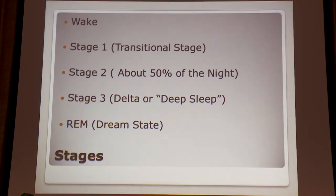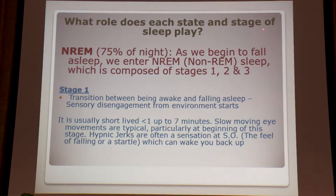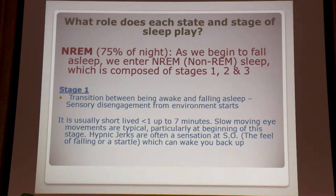And then REM sleep — rapid eye movement — that's when we're dreaming. Non-REM sleep, when we're not dreaming, makes up about 75% of the night, which includes stage two and your deep sleep.